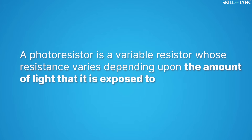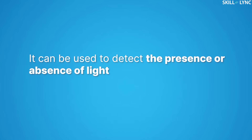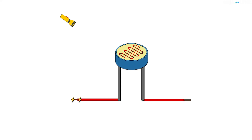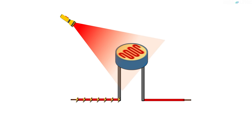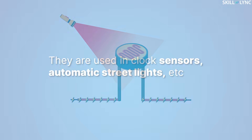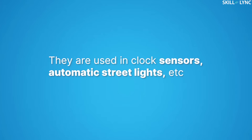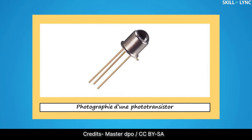Next, we'll discuss photo resistors. A photo resistor is a variable resistor whose resistance varies depending upon the amount of light it is exposed to. It can be used to detect the presence or absence of light. As light is exposed to the photo resistor, the resistance decreases, which leads to more current flow. They are used in clock sensors, automatic street lights, etc.